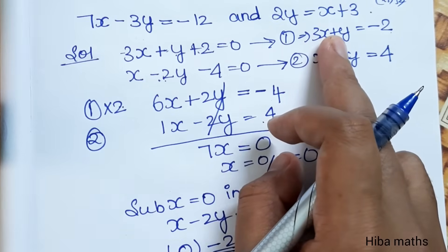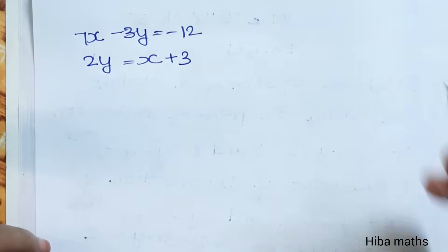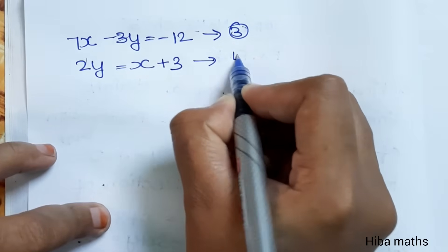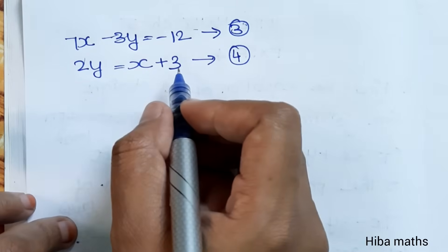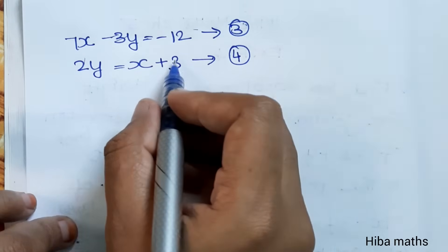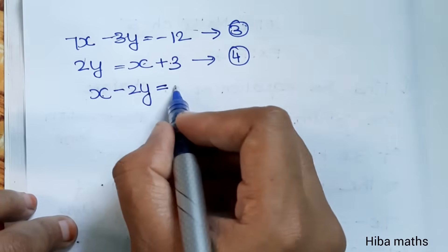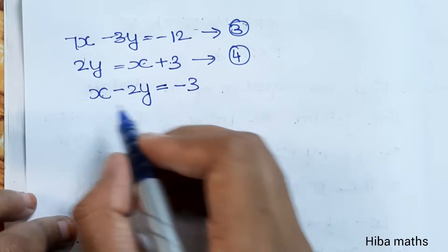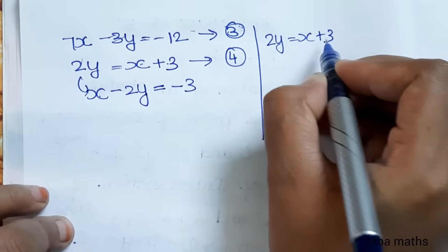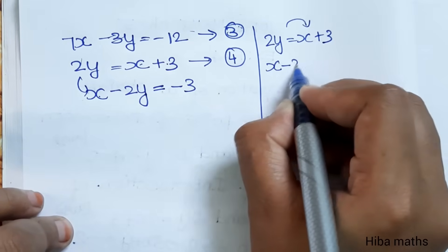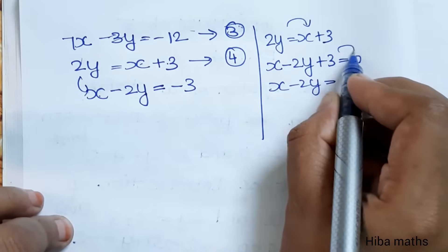For the second pair: 7x - 3y = -12, and 2y = x + 3. Rearranging the second equation: x - 2y + 3 = 0, which gives x - 2y = -3. This is the fourth equation.